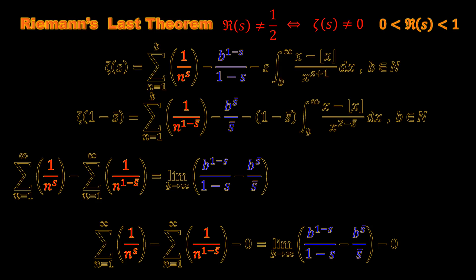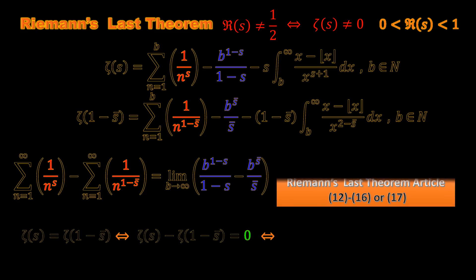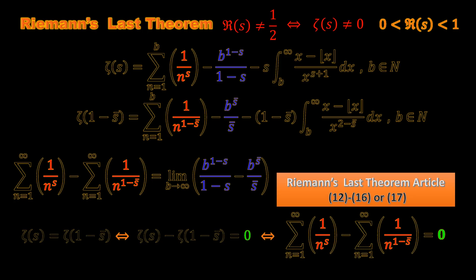Earlier we saw that for the zeros of the zeta function, we can say this or this. Also we can say this.